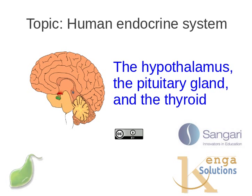Hello, I'm Dr. Derek Keats, a former professor of biology, and I'm going to spend a little more time with you on the human endocrine system. This time we're going to look at the hypothalamus, the pituitary gland, and the thyroid, and how they all work together to control important metabolic functions within the body.